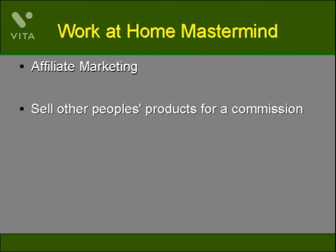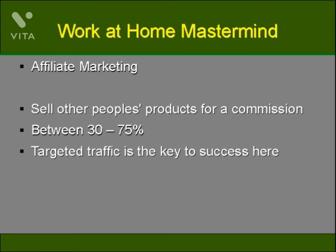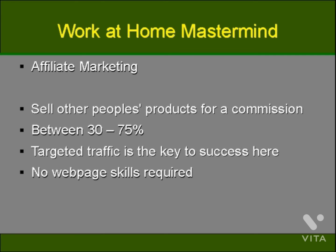Affiliate marketing in a nutshell is that you're marketing for other people. You're given a unique link that goes through to the vendor's website, and when customers go there and buy, you earn a commission. The typical commission runs between 30 and 75%, with 50% being the average. The key to success in affiliate marketing is to drive the right, targeted traffic to those pages in order to get high conversions. There are no web page skills required and everything is set up for you. You simply need to keep the traffic targeted, and to excel you'll want to add other methods besides driving traffic straight to the offer.